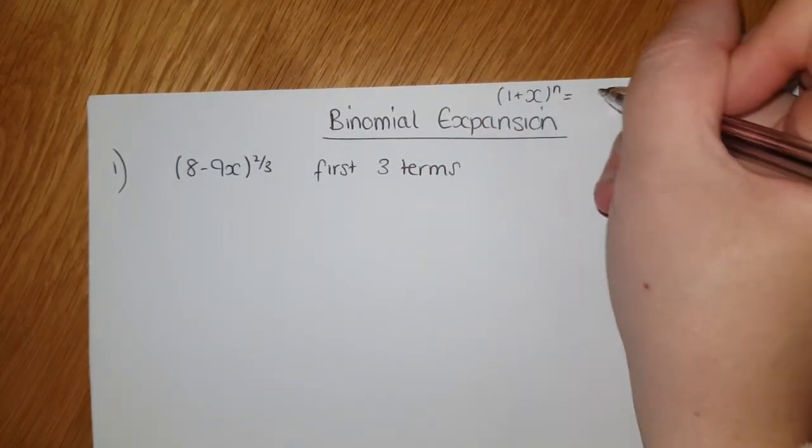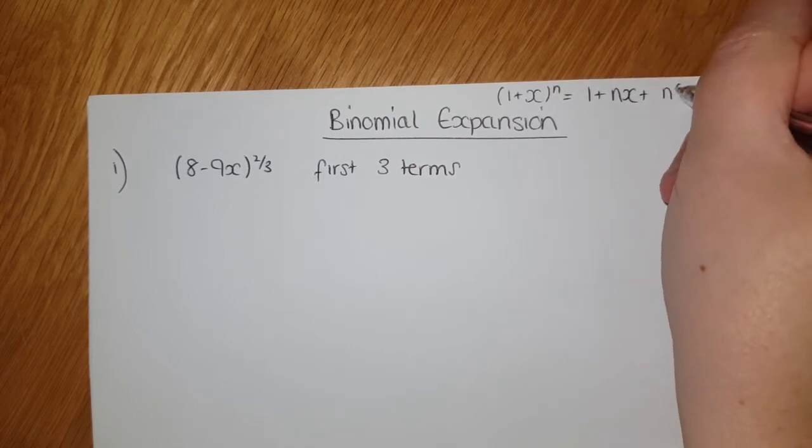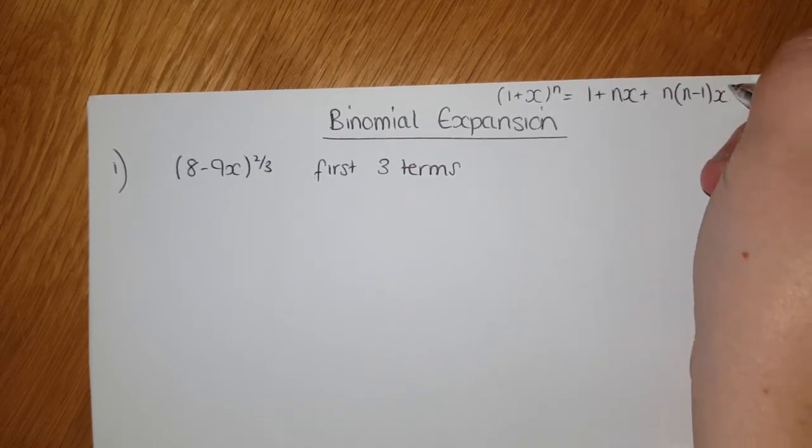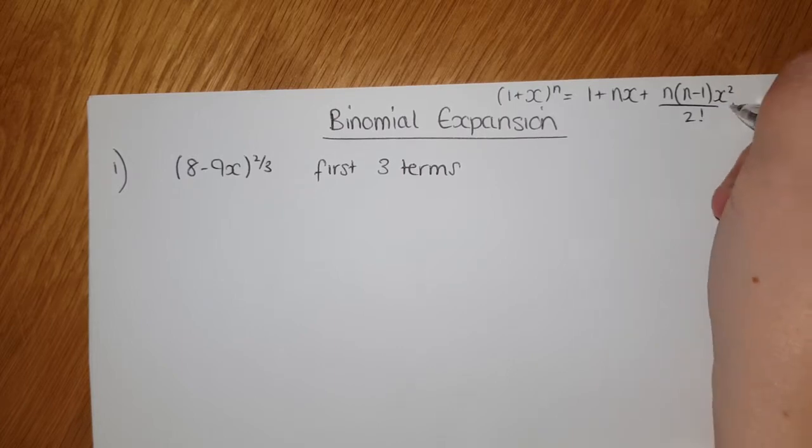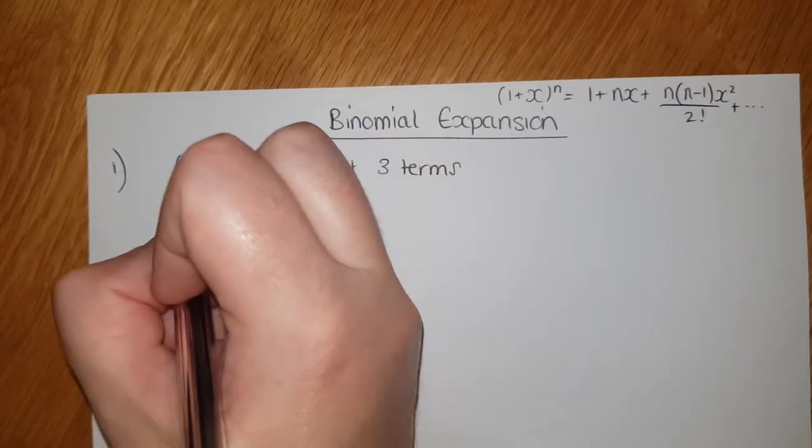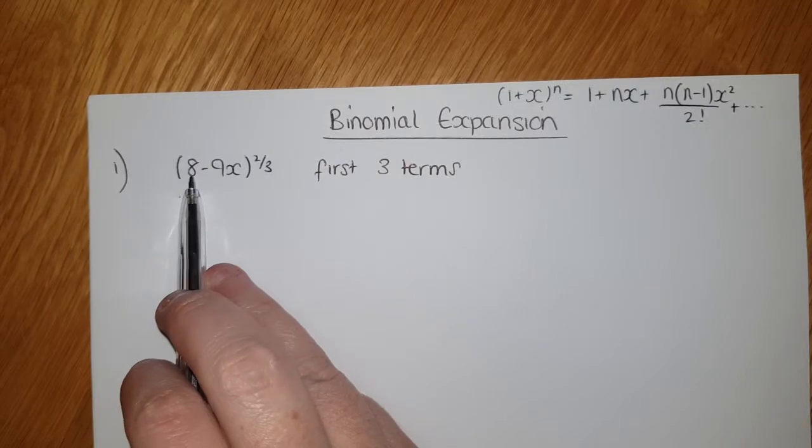And it gives you 1 + nx + n(n-1)x²/2! and so on. So in our case, to write this first of all I need to take that factor of 8 out.